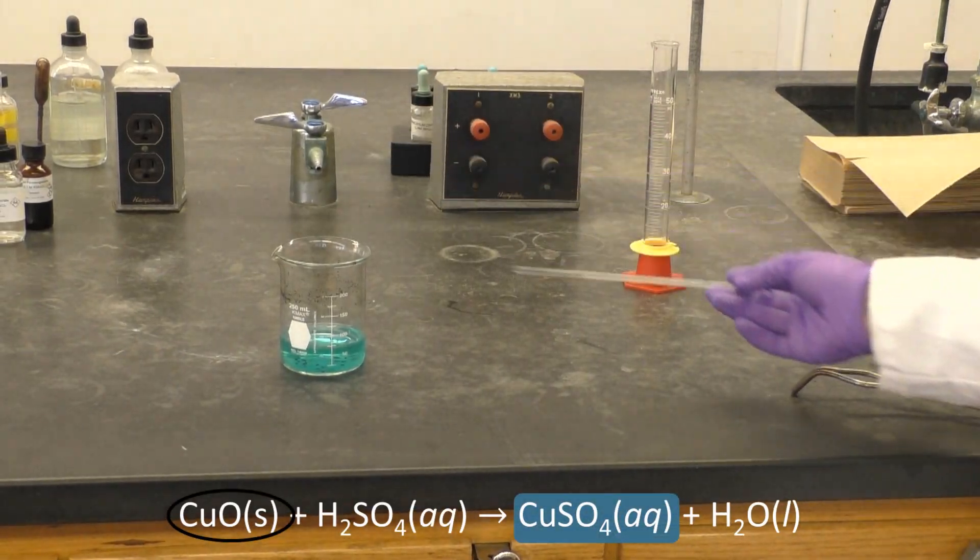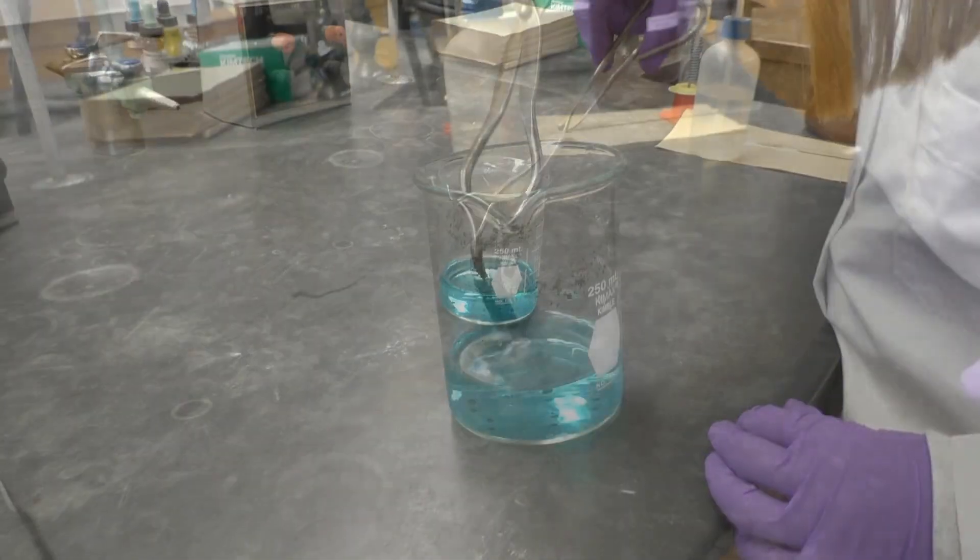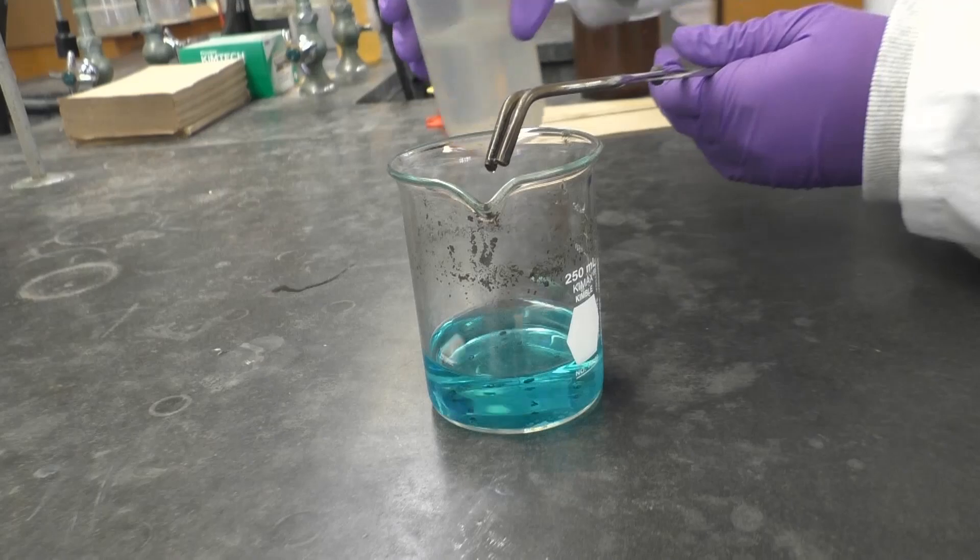The resulting blue solution indicates that you made the desired product. It should now be easy to pick out your boiling chips with tongs and just throw them in the trash.